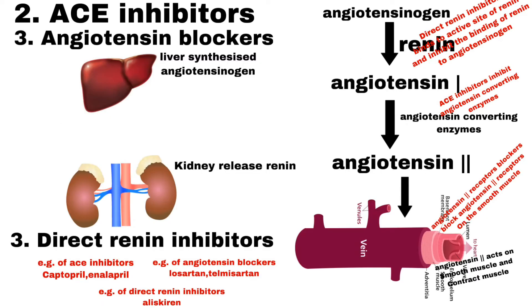Number 2 is ACE Inhibitors. ACE Inhibitors work by interfering with the body's renin-angiotensin-aldosterone system. This is a complex system responsible for regulating blood pressure. The kidney releases an enzyme called renin in response to low blood volume, low sodium level or high potassium level.